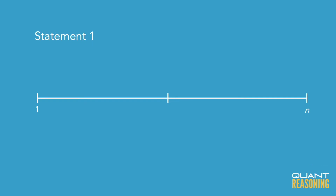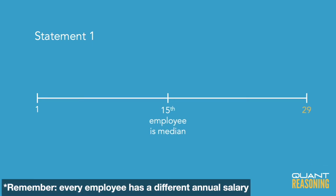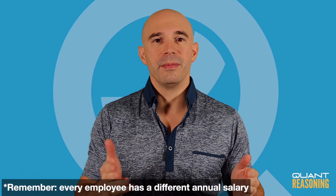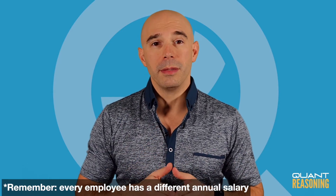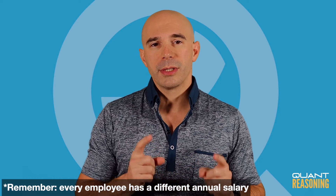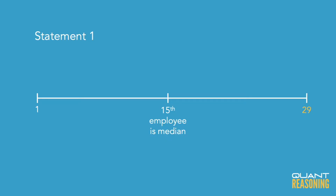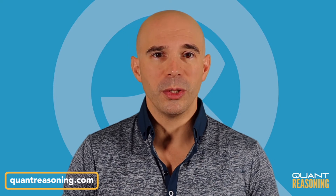We can infer from that that there are exactly 29 employees, because if you arrange 29 of them in ascending order, the 15th one would be right in the middle. So statement one implies that n equals 29, but without knowing any of the salaries, this couldn't possibly be sufficient, and so we can eliminate A and D, because those are the answer choices that claim that statement one is sufficient on its own.